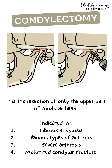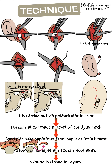Now we will see the technique of condylectomy. The first step is making a pre-auricular incision — the incision made in front of the auricle (the ear) — to expose the condyle. There are different types of pre-auricular incisions: Dingman, Blair, Thoma, and one of the most commonly used, the Al-Qayat and Bramley's incision.